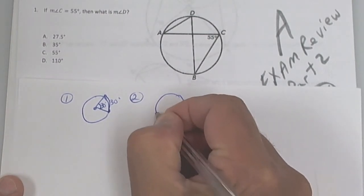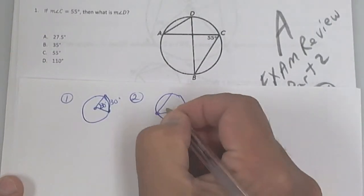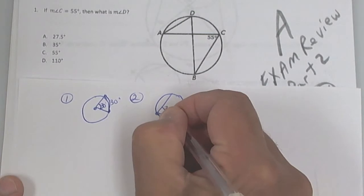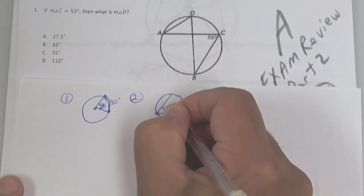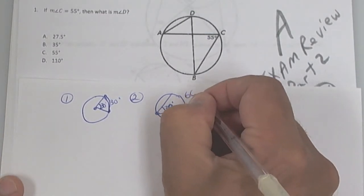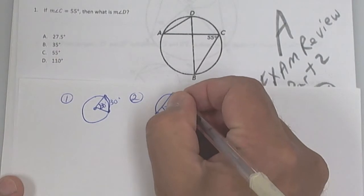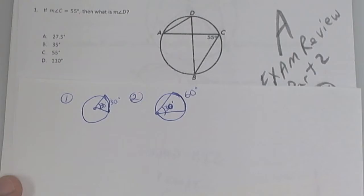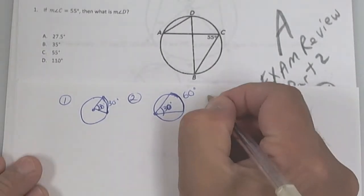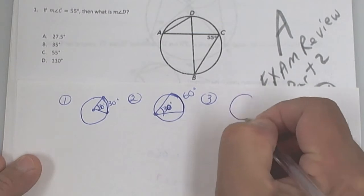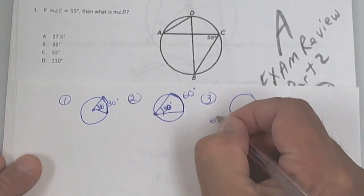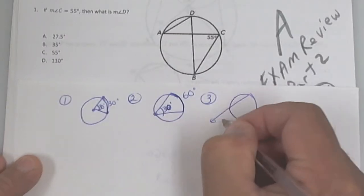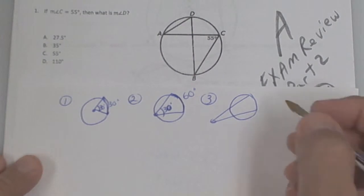Number two is called an inscribed angle because the vertex is on the circle. The angle is half of the intercepted arc, so if the arc is 60 then the angle is 30, and if the angle is 30 then the arc is 60.